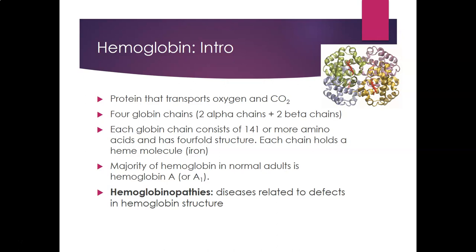The primary structure is the sequence of amino acids. The secondary structure includes coils and beta-pleats. The tertiary structure is the three-dimensional folded protein. When four of those 3D globin chains are assembled together, you have what we call a quaternary structure.